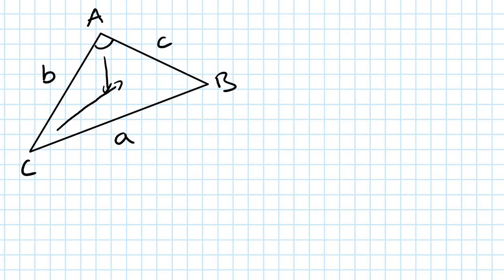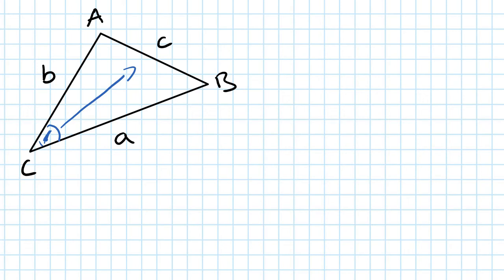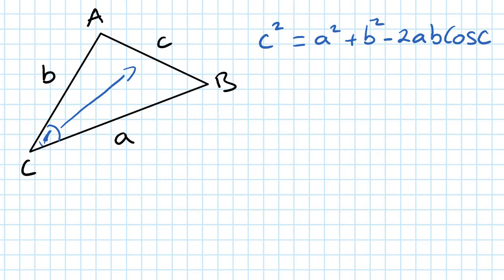So now I'm going to use the cosine rule — write out this cosine rule for you. Let's focus on angle C. So opposite of angle C is c. The rule is: c squared is equal to a squared plus b squared minus 2 times a times b times cos of angle C. That is the cosine rule.